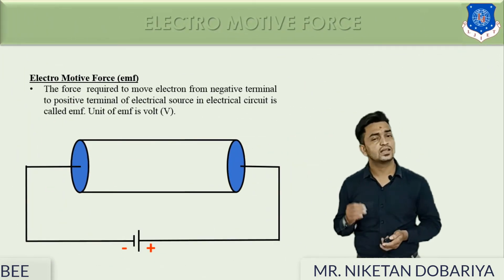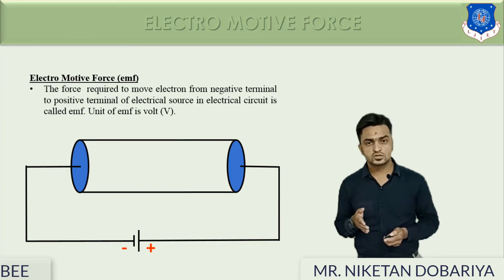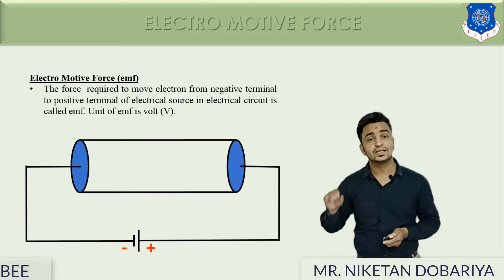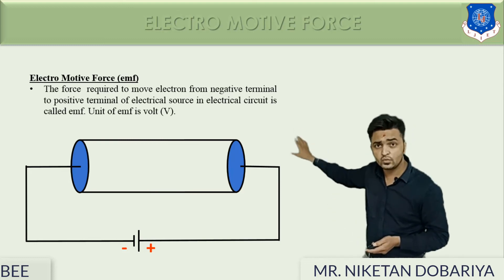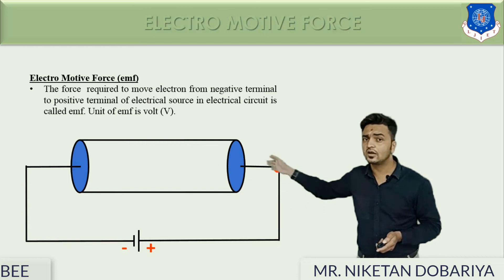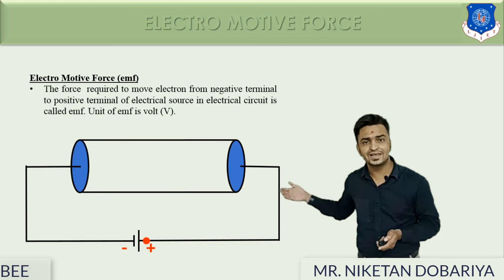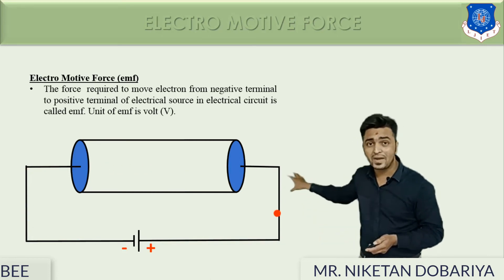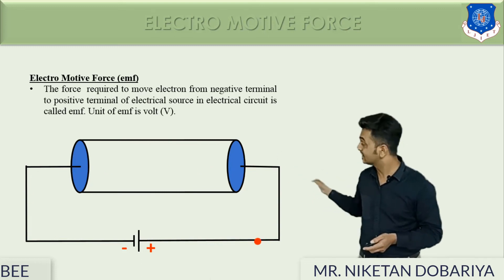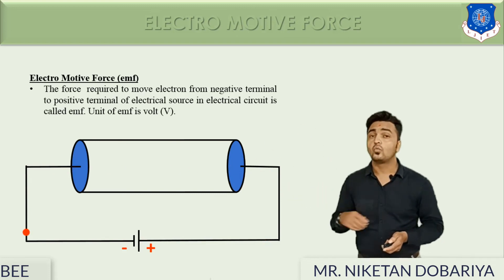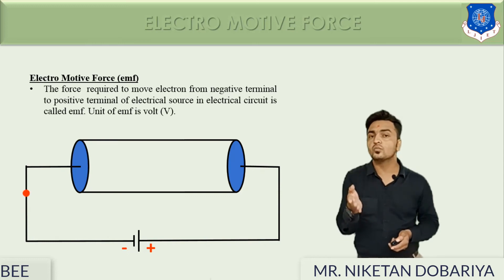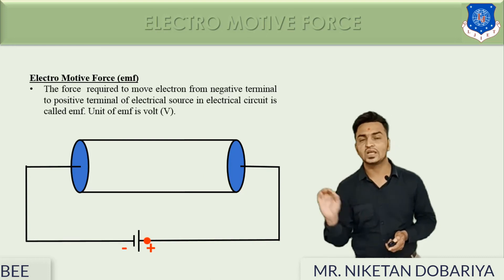Next, let's move to the definition of EMF — electromotive force. A force required to move electrons from the negative terminal of a source to the positive terminal of a source is defined as EMF, electromotive force. Here we have a conductor connected with a DC source, represented by red dots showing free electrons. As we applied a potential through this battery to the conductor, negative charge electrons move from the negative terminal to the positive terminal of that source via this body. The force causing this motion is known as EMF, electromotive force.